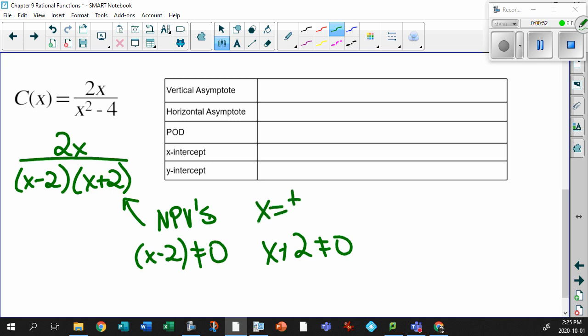Boy, this looks an awful lot like Math 20-1. The reason why is because it is. So our non-permissible values determine our vertical asymptotes. So at x equals 2 and x equals minus 2 is our vertical asymptote.